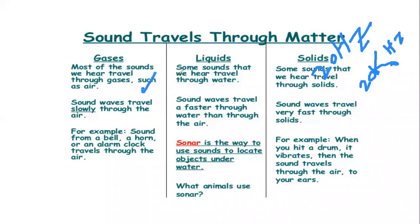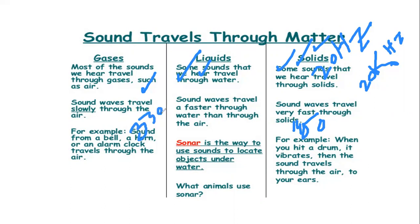As we go from air to liquid to solid, the speed becomes greater. In solid, the velocity is 450 meters per second or more. In air, the velocity is around 330 to 332 meters per second, depending upon the temperature.